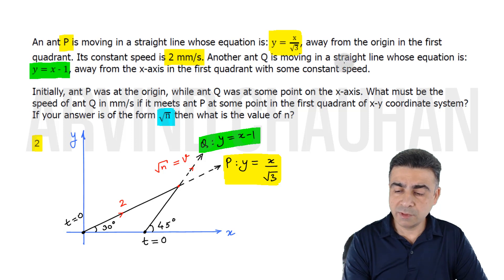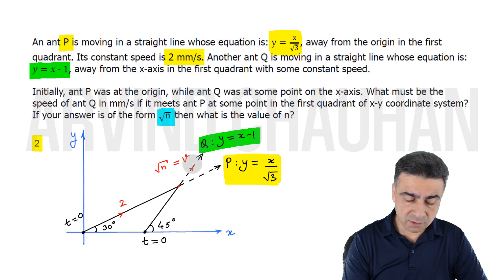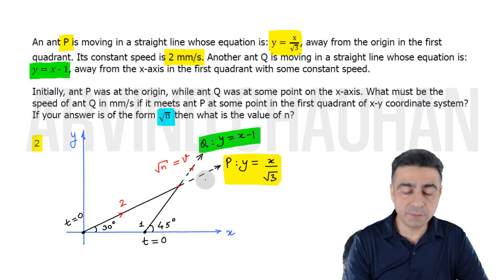Another ant Q is moving in a straight line whose equation is y equals x minus 1. At x equals 1, this point is 1 here. That's the x-intercept and the slope is 1, so it's making an angle of 45 degrees with the x-axis. Ant Q is also moving away from the x-axis in the first quadrant with some constant speed V.